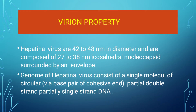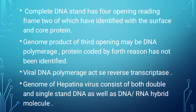Virion Properties. Hepatitis B virions are 42 to 48 nanometers in diameter and are composed of a 27 to 38 nanometer icosahedral nucleocapsid surrounded by an envelope. The genome of Hepatitis B virus consists of a single molecule of circular, partially double-stranded, partially single-stranded DNA. The complete DNA strand has four open reading frames, two of which have been identified with surface and core proteins.